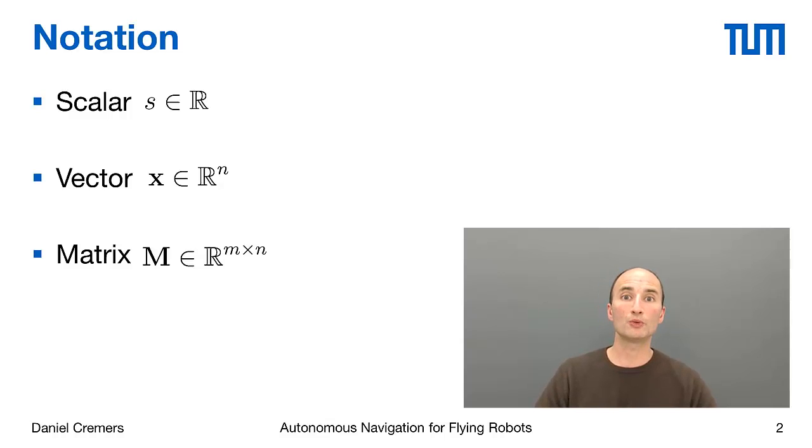The entities that we'll be working with in this class are scalars, vectors, and matrices. Scalars are just real numbers that we denote by lowercase letters typeset in italics. Vectors are sets of numbers, say in R^n, that we denote by lowercase letters typeset in bold. And matrices are arrays of n by n numbers that we denote in uppercase letters typeset in bold.